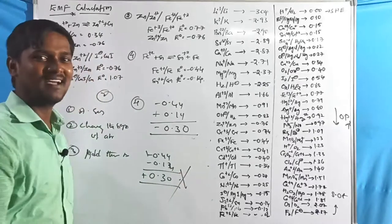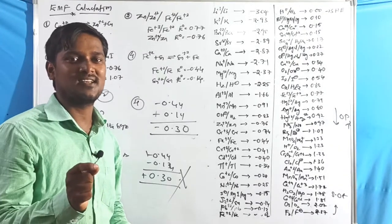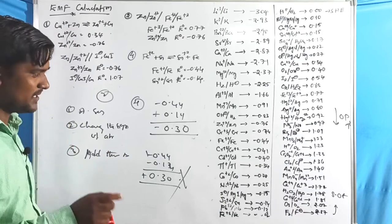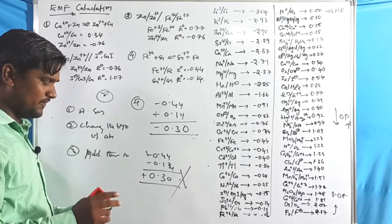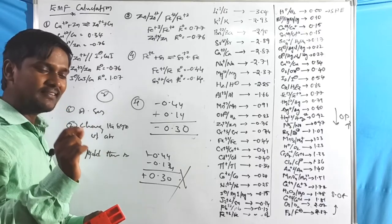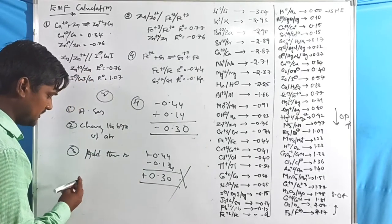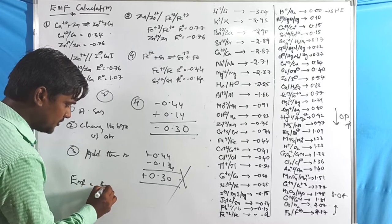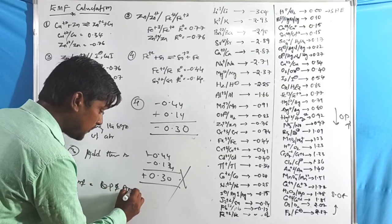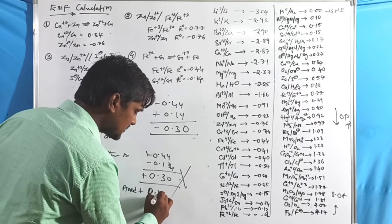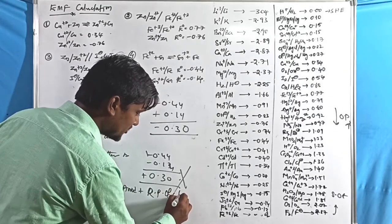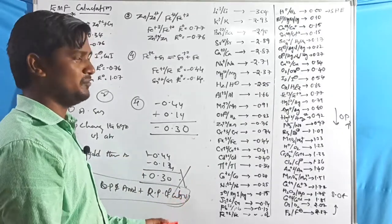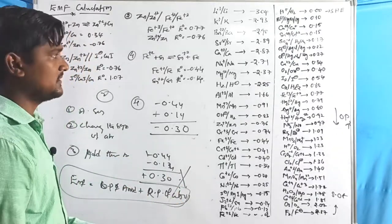This is the second rule — the modification: wherever the oxidation reaction takes place, change the sign of that particular electrode only. This is because EMF = oxidation potential of anode + reduction potential of cathode. So always identify which electrode undergoes oxidation and change only that electrode's sign, regardless of whether it is on top or bottom.